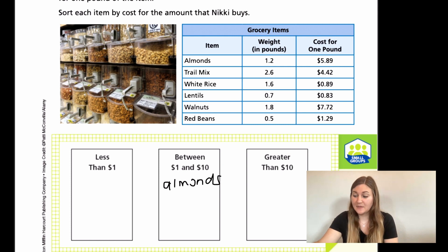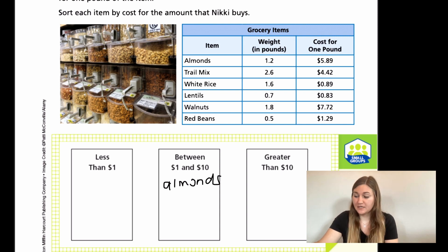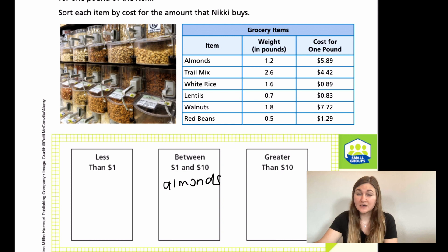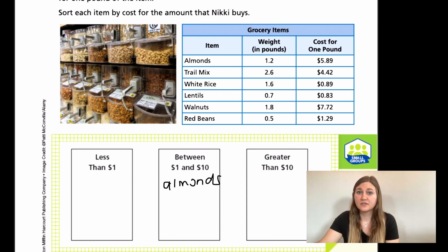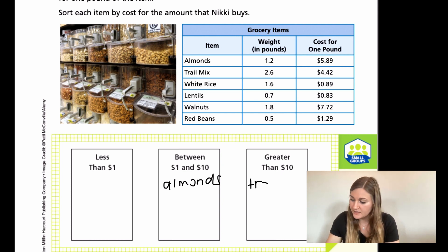For trail mix, we have 2.6 pounds — that's going to be double and then almost half as much. We have $4.42, so doubling gives about $9, and then half of that $4 is about $2. So we're talking about $11, which puts the trail mix in the greater than $10 category.